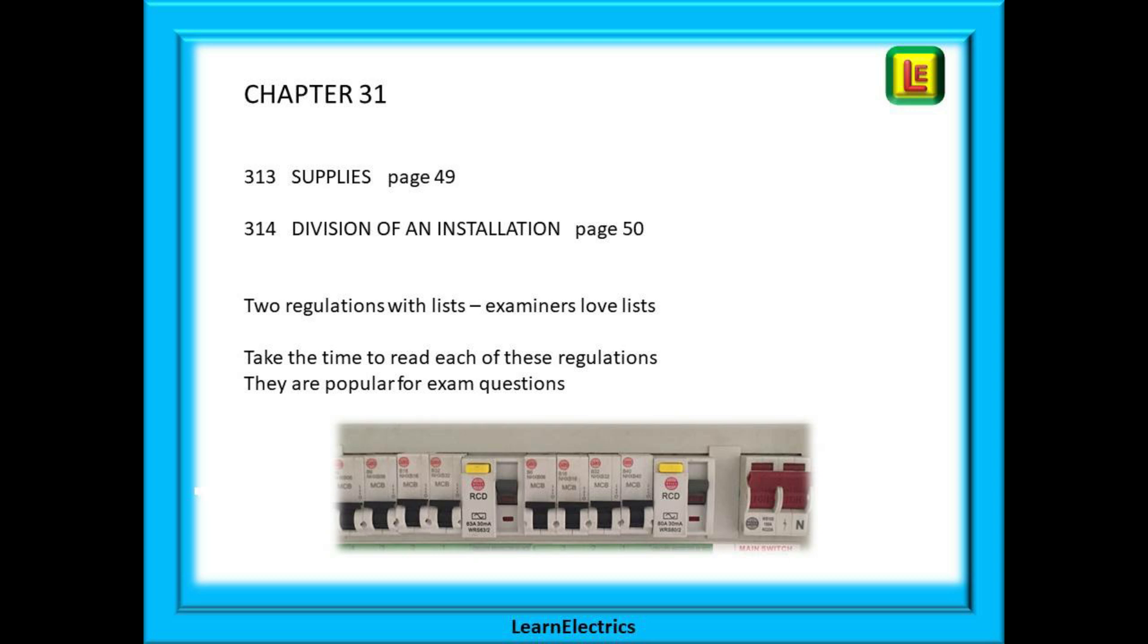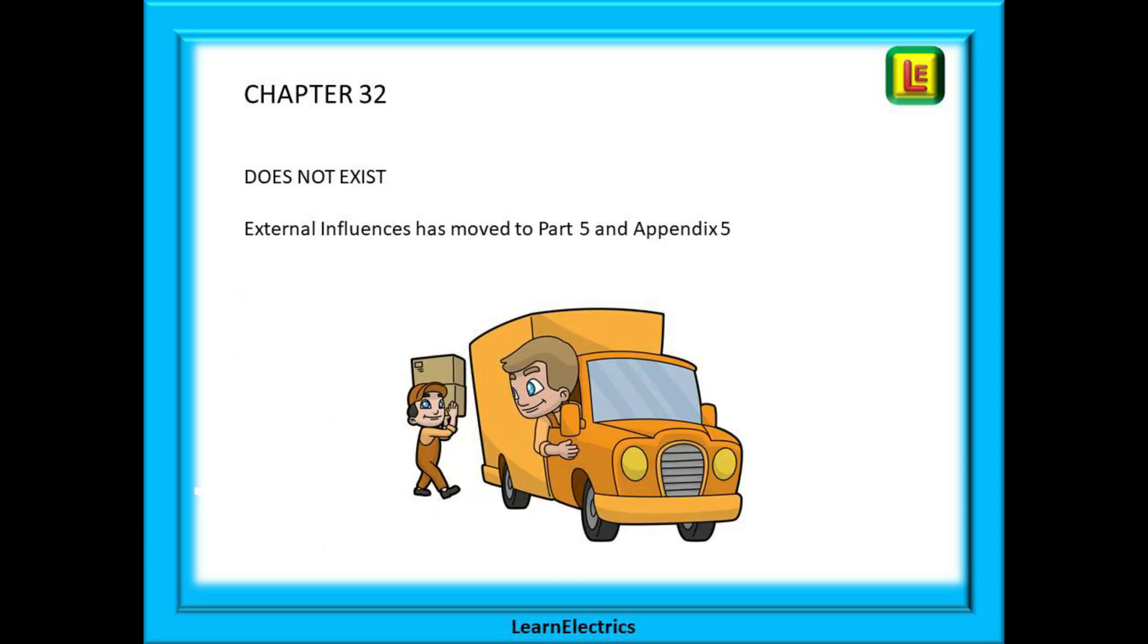Chapter 32 is very easy. It is moved to Part 5 of the wiring regulations and to Appendix 5. And you will not be asked questions on this old section in this part of the exam.